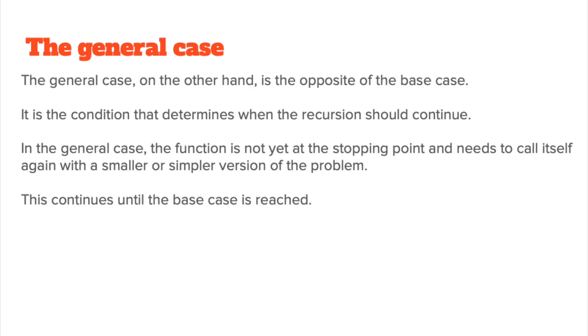So what about the general case? Well, the general case on the other hand is the opposite of the base case. It is the condition that determines when the recursion should continue. In the general case, the function is not yet at the stopping point and needs to call itself again with a smaller, simpler version of the problem. You keep breaking the problem down into simpler chunks until you reach that base case, and when you reach that base case you stop. So the general case continues until the base case is reached, and that's the exit condition, and then it unwinds itself.